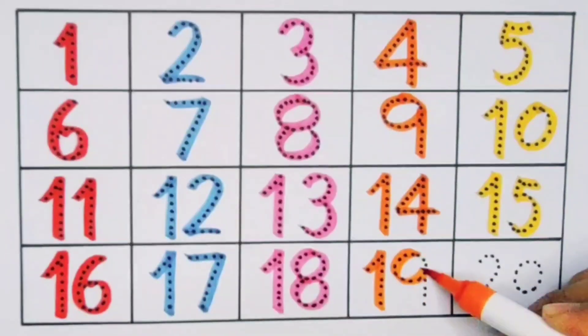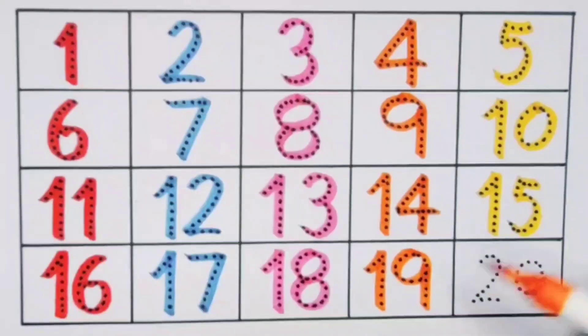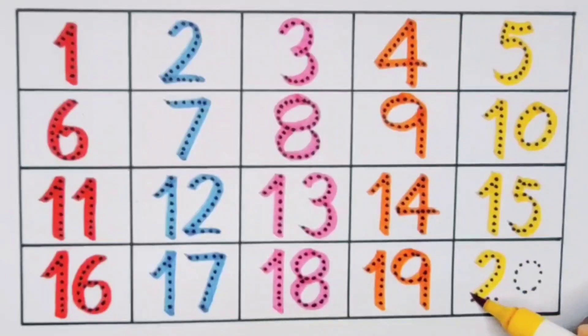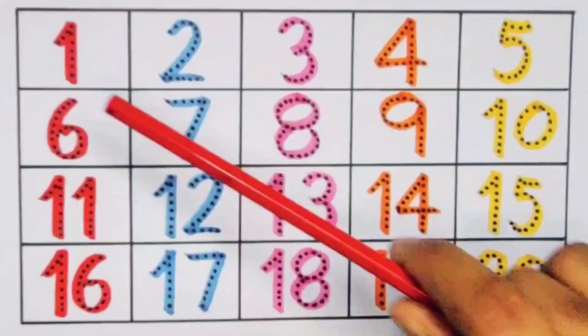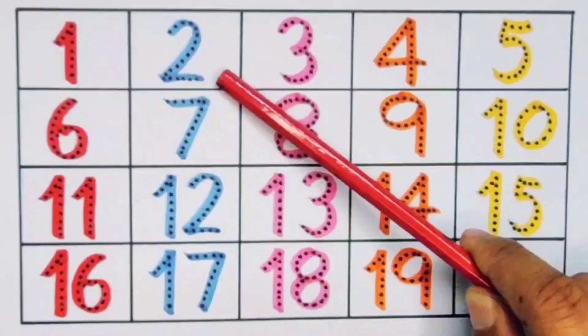Next, number 20. 2-0, twenty, number 20. What did we learn? We learned 1, 2, 3, 4, 5, 6, 7, 8, 9...